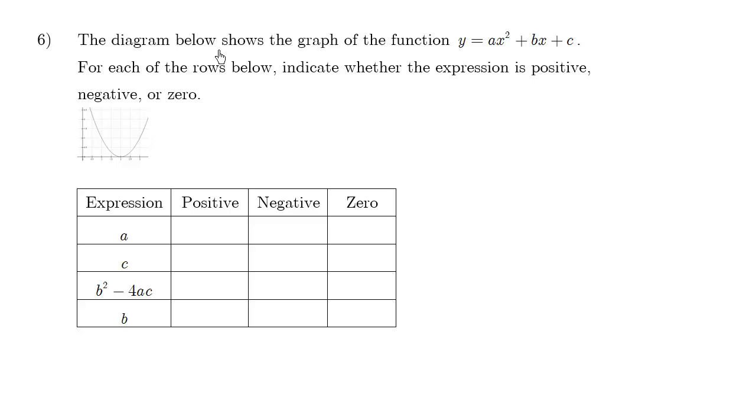Question number six. The diagram below shows the graph of the function in this form, the general form. For each of the rows below - row one, row two, row three, row four - indicate whether the expression is positive, negative, or zero.